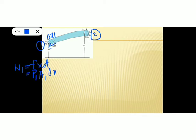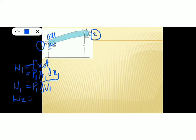Area into displacement can be considered as equivalent to volume — area into height is volume, similarly area into displacement is equivalent to volume. So work done W1 equals P1 into delta V1, where delta V1 is the change in volume on region 1. Similarly, work done on region 2 can be written as P2 into delta V2. But here work done is negative because the direction of pressure and displacement is different in region 2.